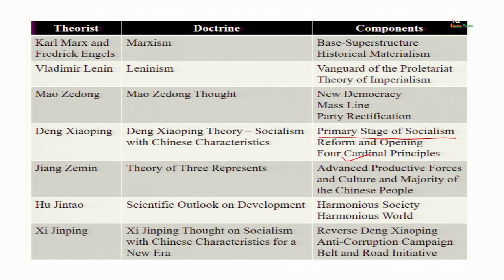That is known as the four cardinal principles. The socialist road would be followed, the Communist Party would be the vanguard, and Marxism-Leninism, Mao Zedong Thought would be the main ideology, but focus would be on economic development through reform and opening. Market economy would be introduced, foreign investment would be allowed, and special economic zones would be established. This has been the ideological position of the Chinese Communist Party since 1978.